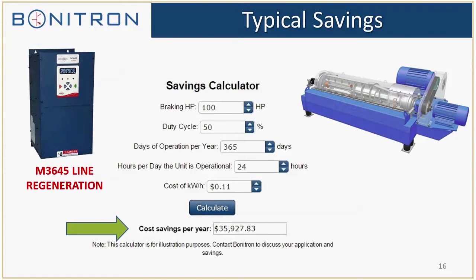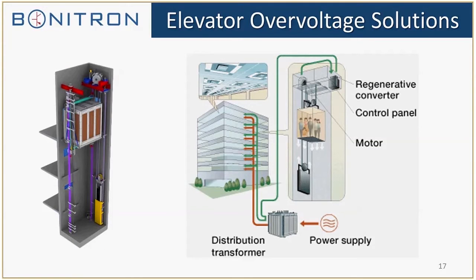Typical savings here: at a 100 horsepower motor at 50% duty cycle, operating 365 days at 24 hours a day at 11 cents per kWh, your cost savings per year will come to $35,927.83. Those are very large savings per centrifuge. If you have someone with five or six of those centrifuges in the facility, that adds up quickly.